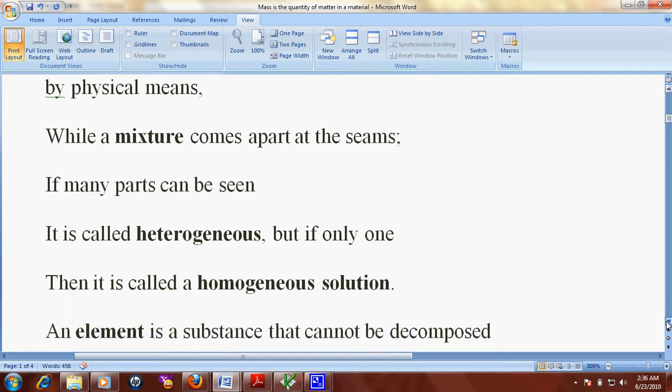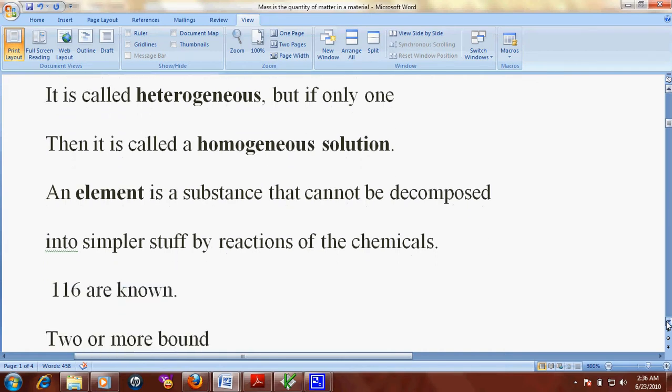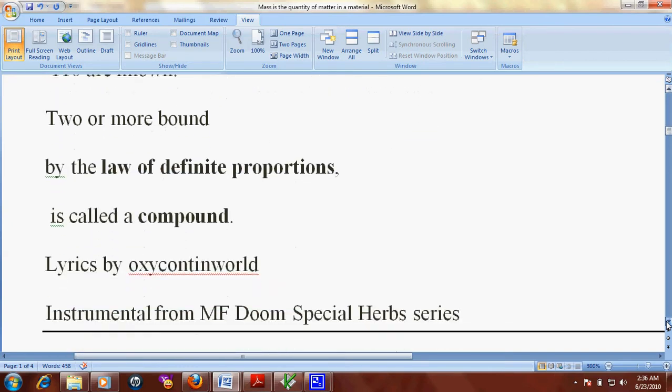If many parts can be seen it is called heterogeneous, but if only one, then it is called a homogeneous solution. An element is a substance that cannot be decomposed into simpler stuff by reactions of chemicals. 116 are known. Two or more bound by the law of definite proportions is called a compound.